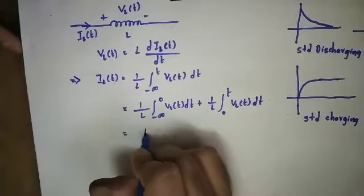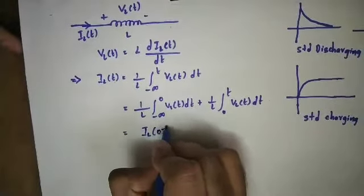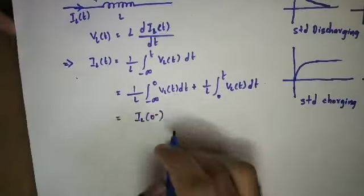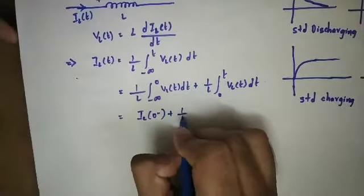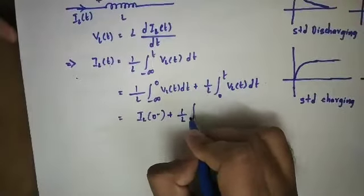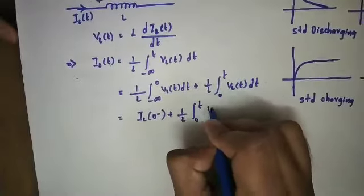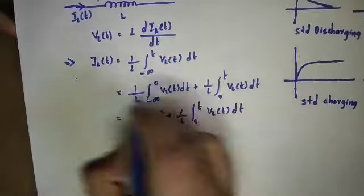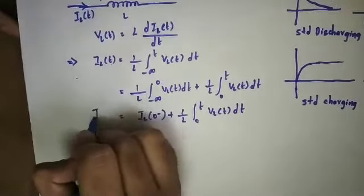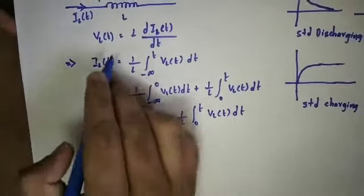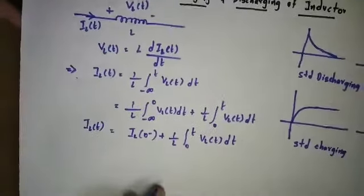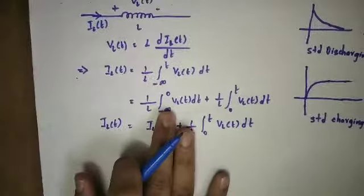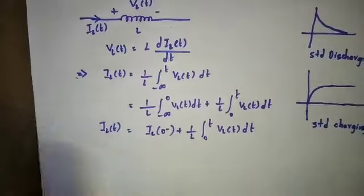This is simply IL of 0 minus. So inductor current IL(0 minus) plus 1 by L times integral from 0 to T of VL(t) dt. So this is IL of T. This is the first basic solution.